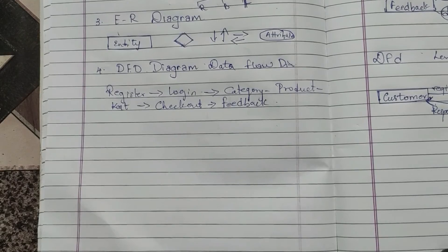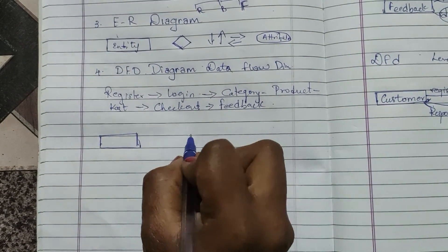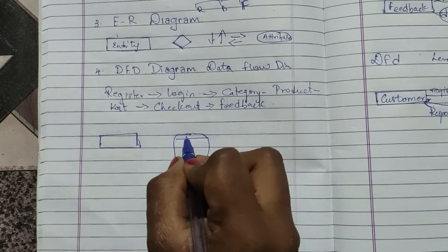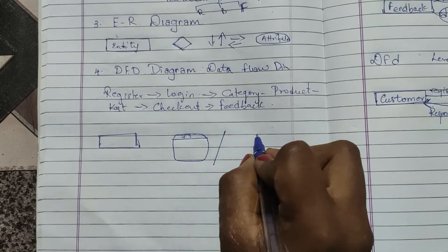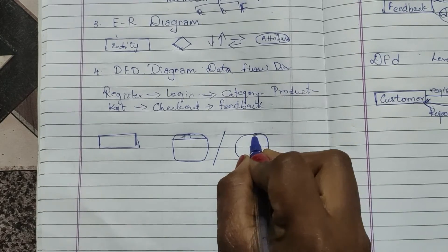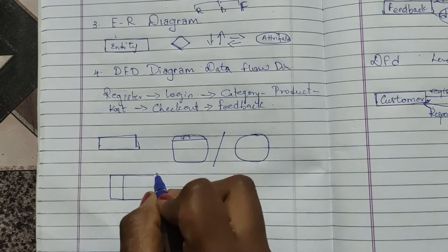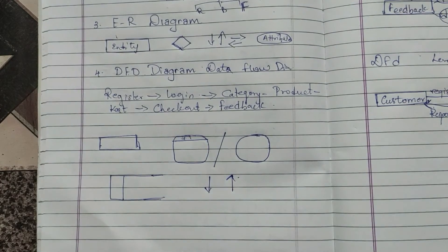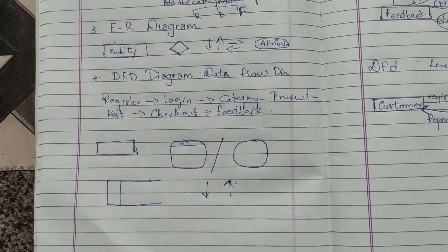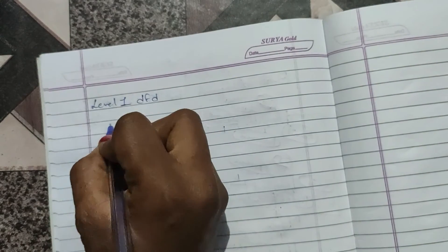Before going to level 1, let me explain the basic DFD symbols. You have a rectangle for the external entity, a circle or rounded rectangle for the process symbol (with a numbering), an open rectangle for the data store representing your database, and connecting lines with arrows to show data flow.